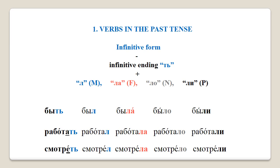There is a more detailed explanation of this in the supplementary material attached to this lecture. Remember that the infinitive form is the form of the verb that we find in a dictionary and is equivalent to English 'to run,' 'to work,' 'to do.' To form the past tense, all we have to do is drop or replace the infinitive ending — the soft sign — and for masculine use L, for feminine use LA, for neuter use LO, and for plural use LI.